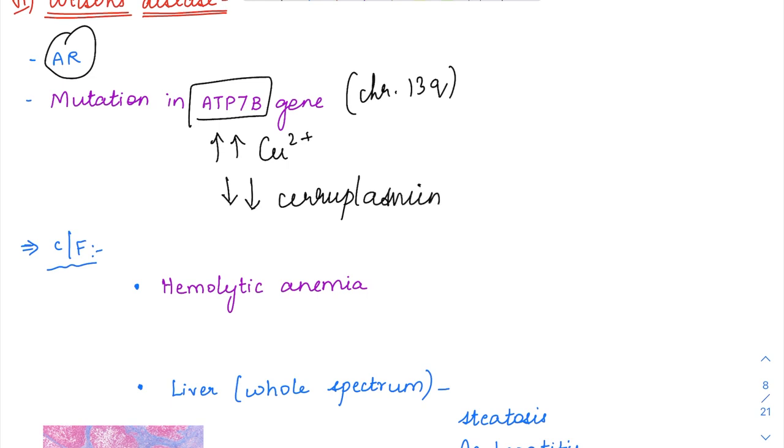Ceruloplasmin takes up copper and delivers it to various tissues that need it, as copper is a cofactor for many enzymes in the body. In Wilson's disease, there is increased copper and decreased ceruloplasmin.